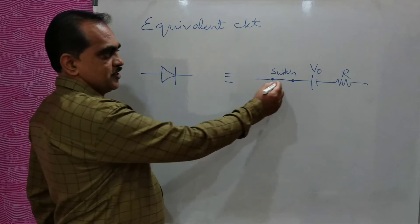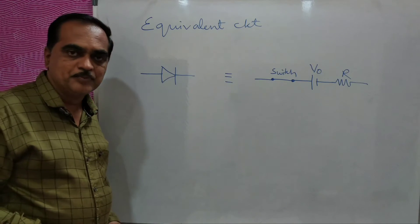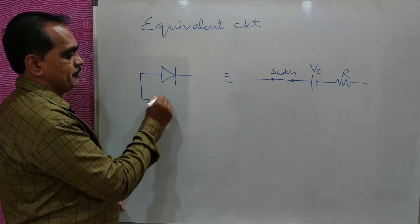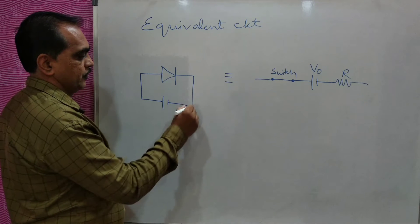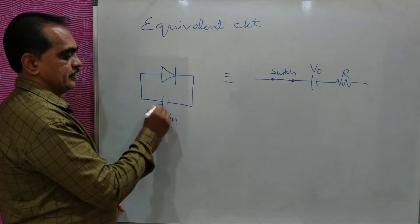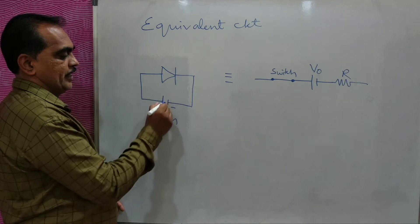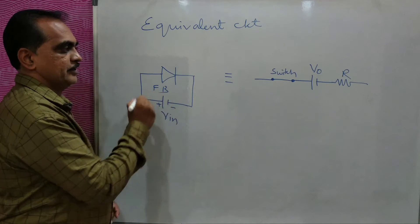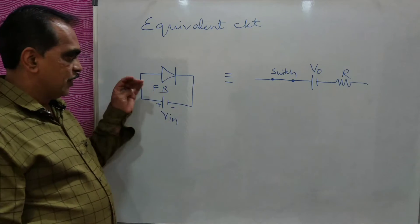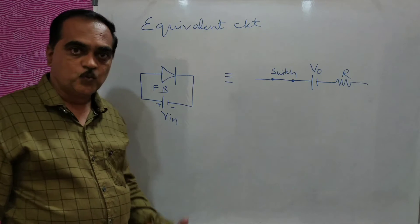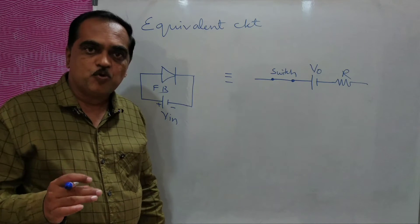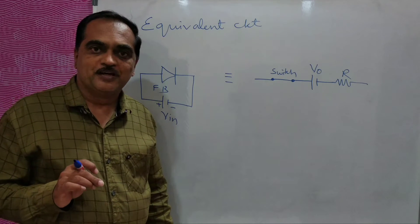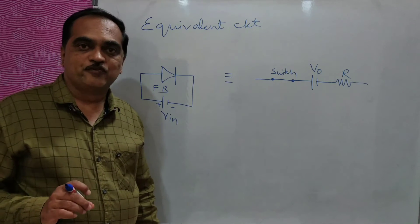Now why we have shown this switch and barrier potential? Because say for example, if you forward bias it — if this diode is forward biased, positive is connected to the anode and negative is connected to the cathode — the diode will start conducting once the input voltage is more than the potential barrier, that is 0.3 volt in germanium and 0.7 volt in silicon.